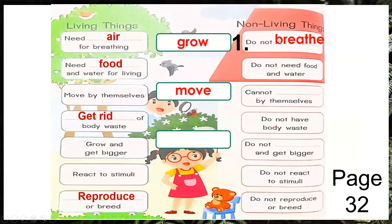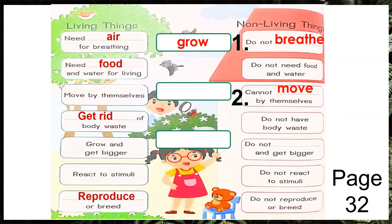Non-living things do not breathe — it can also be grow or it can also be move. For number two it says: non-living things cannot blank by themselves. So what is your answer — is it grow or move? If your answer is move, then you are correct, good job. Number three says: non-living things do not blank and get bigger. We are left with only one choice, so the answer is grow. You write grow here: G-R-O-W. You can pause this if you are not finished.